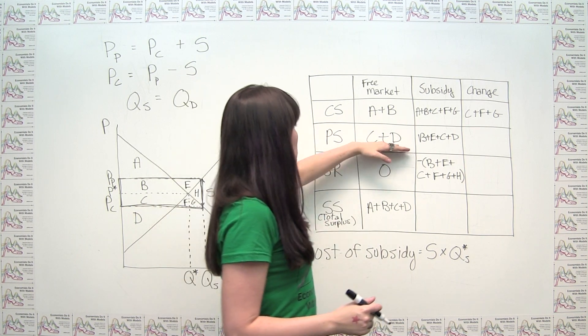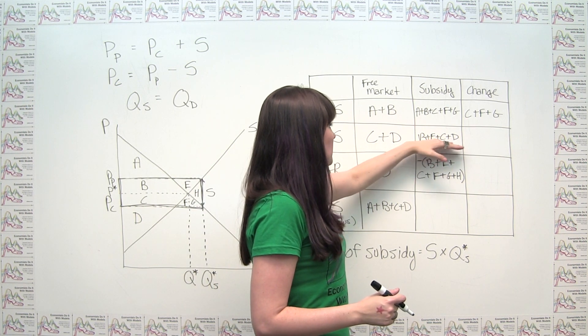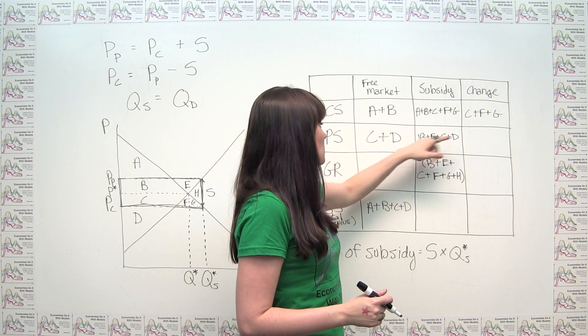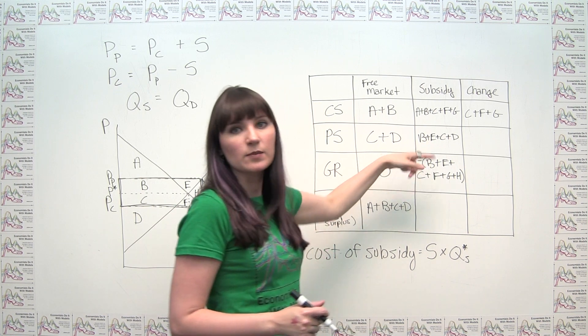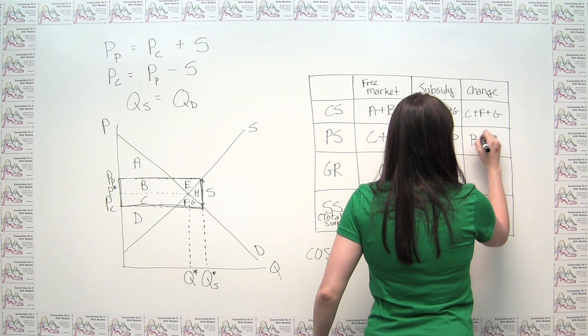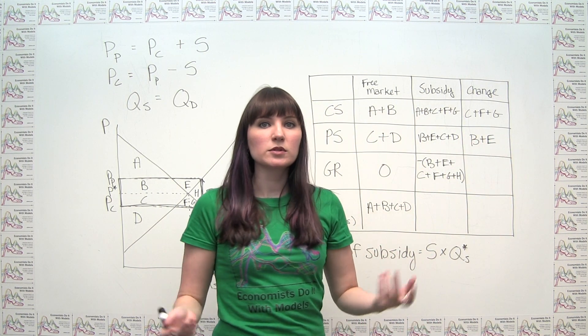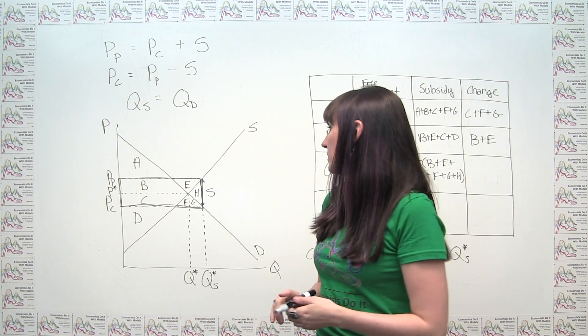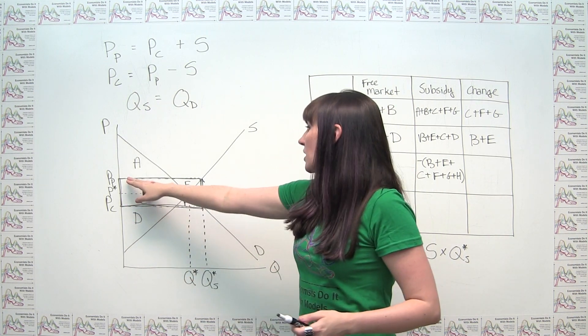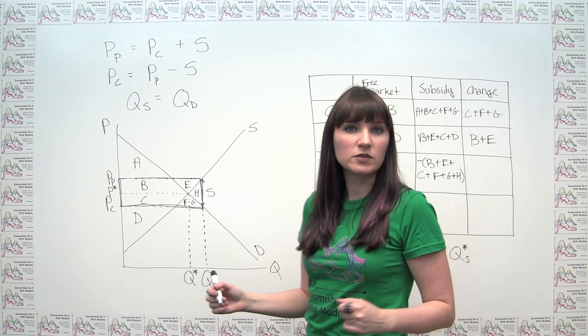Similarly, producers used to get C and D in a free market. Now they're getting B, E, C, and D. So they were graced with an additional B plus E because of this subsidy. And it's also not particularly surprising that producers are made better off by this subsidy because they're able to get a higher price for what they're selling and they're selling more of it. That sounds good for producers.